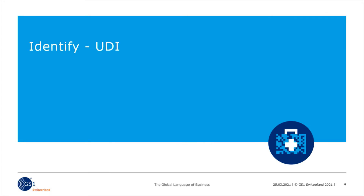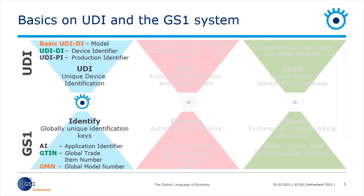Let's move to the chapter identifying the UDI. We will start with the identification key of the GS1 system to create the UDI. In order to create a uniform basis, we must first learn the basics of the GS1 system.